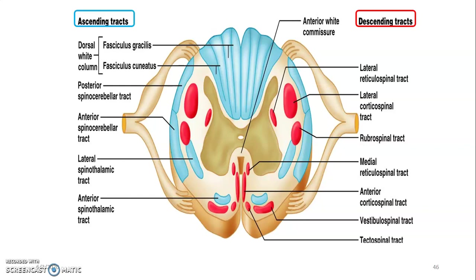Starting with the ascending tracts: the dorsal column contains fasciculus gracilis and fasciculus cuneatus on both sides. From the dorsal median sulcus, fasciculus gracilis is medial, followed by fasciculus cuneatus laterally. Both carry proprioception, vibration, and two-point discrimination. Fasciculus gracilis carries information from the lower limb — below T6 — while fasciculus cuneatus takes over above T6, carrying proprioception, vibration, and two-point discrimination from the upper body.